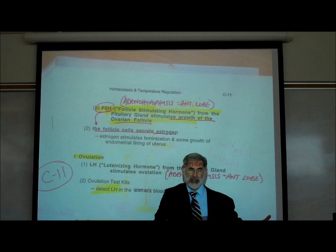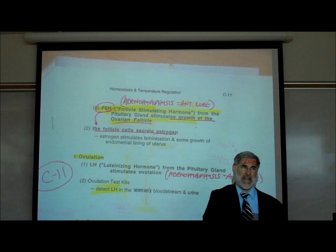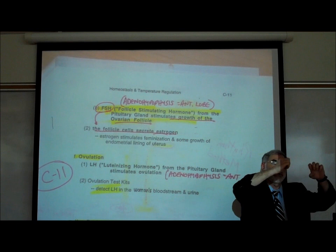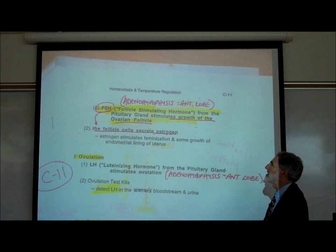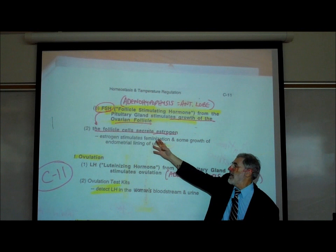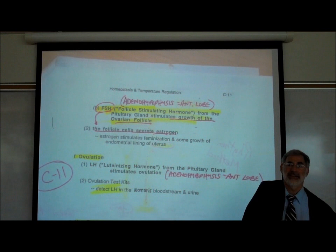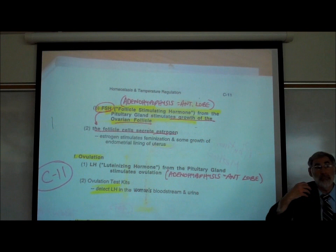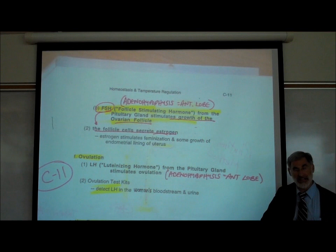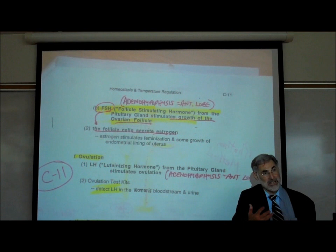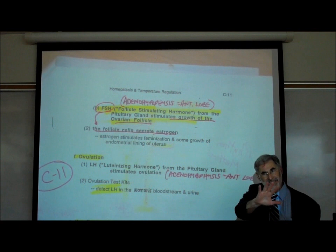Things happen because other things cause them — there's always a causation, a sequence of events. FSH causes the growth of the ovarian follicle and causes the follicle cells to secrete estrogen. What caused the FSH to be released? That's controlled by the brain — we'll learn that later. This is also why emotional distress, anxiety, fear, and stress can affect or even stop the menstrual cycle, because it's ultimately controlled by the brain.